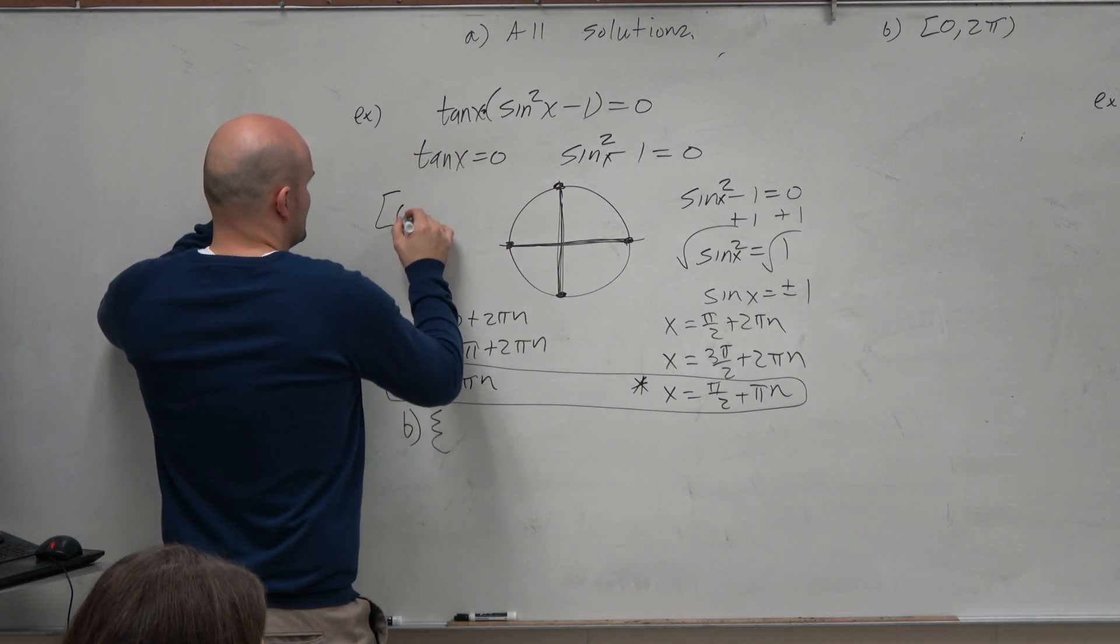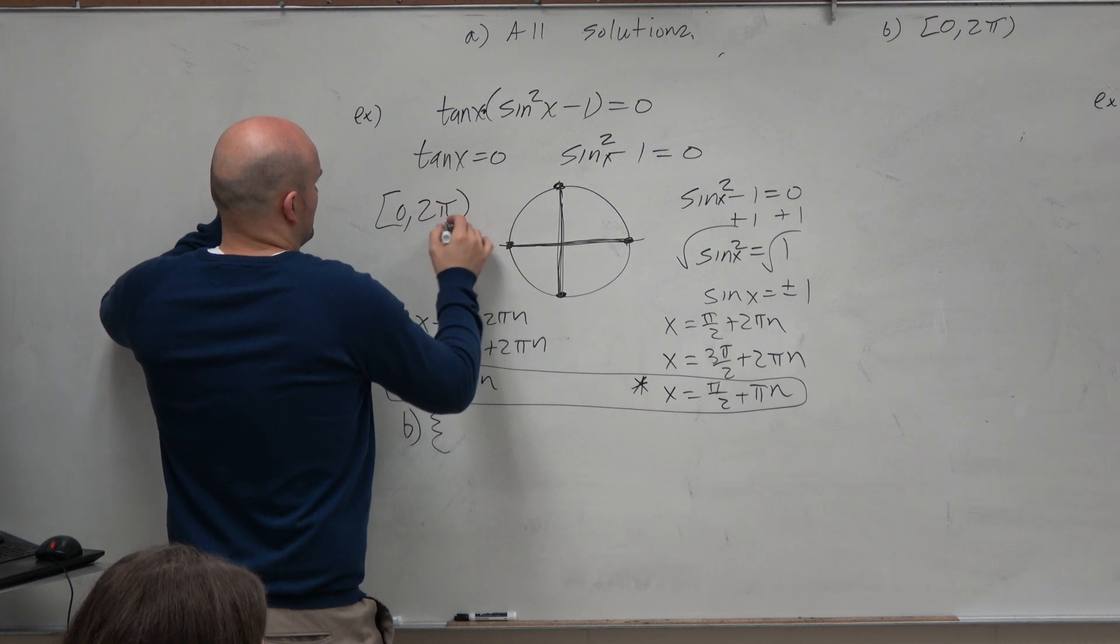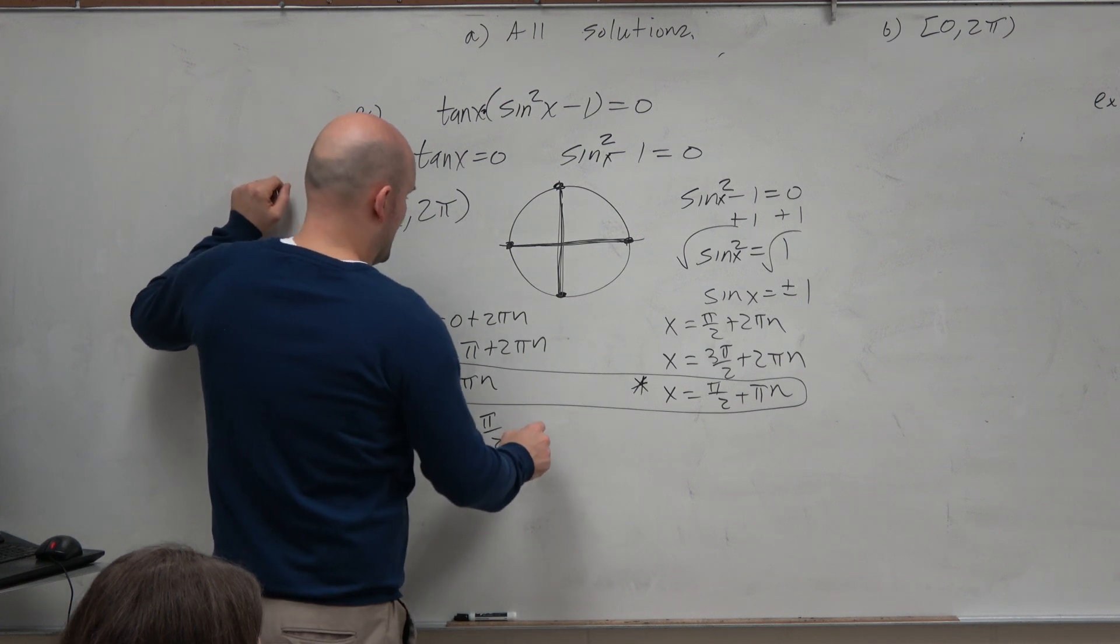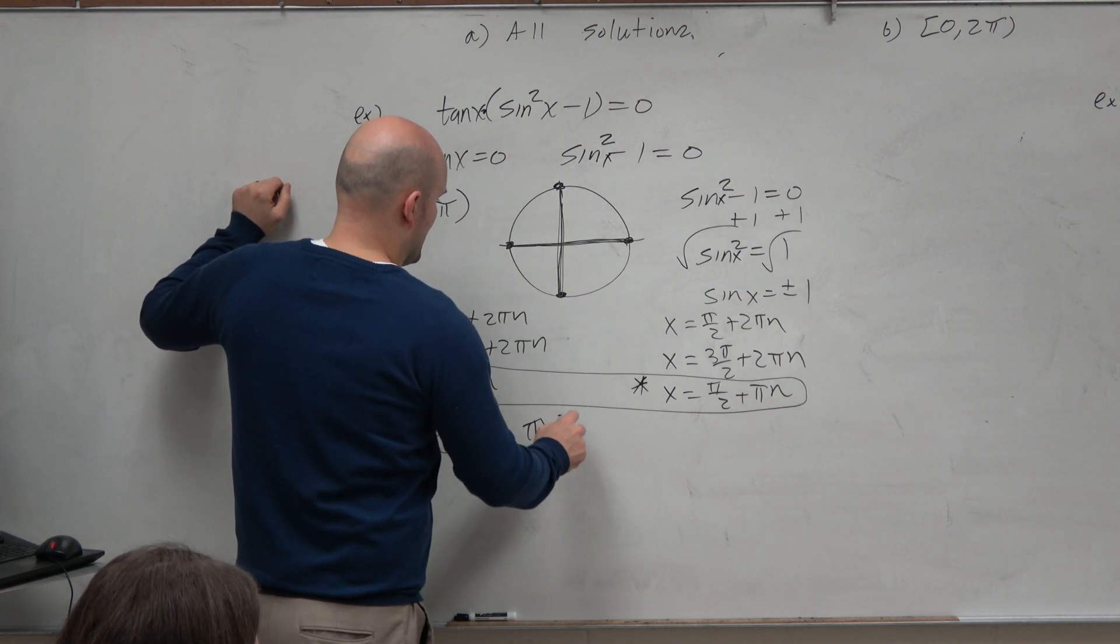Right? Remember it was written like this, 0 to 2π. So 0 works, π half works, π works, 3π halves works.